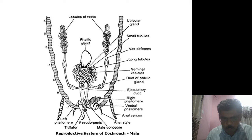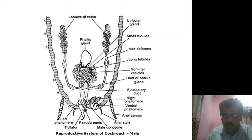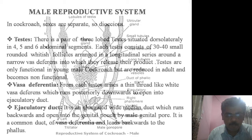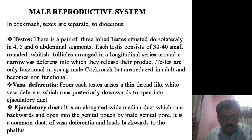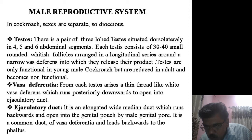Hello friends, today we'll discuss the male reproductive system of cockroach. The male reproductive system of cockroach has the pair of testes, pair of vas deferentia, the ejaculatory duct, the phallic gland, mushroom gland, and the male gonapophysis — that are ventral phallomere, left phallomere, and the right phallomere.